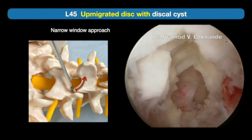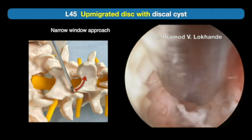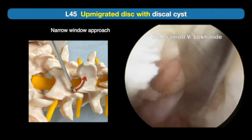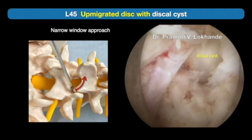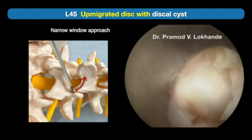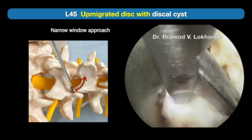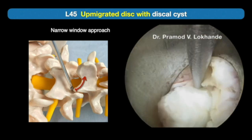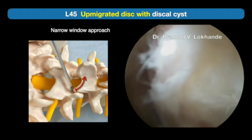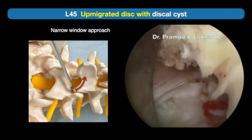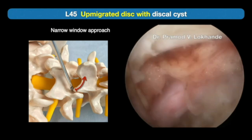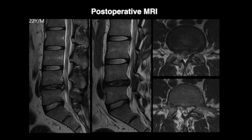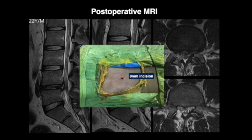We continue cutting the flavum laterally towards the facet joint until the lateral border of the nerve root is identified. We mobilize the nerve root and advance the tip of the cannula downward towards the base, rotating it to retract the nerve root with the tip of the working sleeve — it acts like a dura dissector. The cannula is tilted upwards to visualize the discal cyst, and annular release is done to mobilize the herniated mass, which is easily removed with a forceps. Post-operative MRI shows complete removal of the disc herniation through a very small 8-millimeter incision with hardly any blood loss and no drain required.